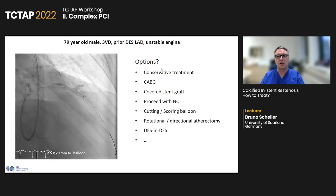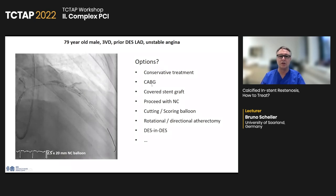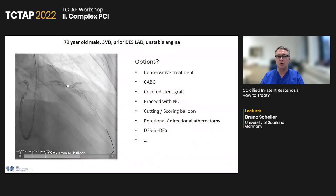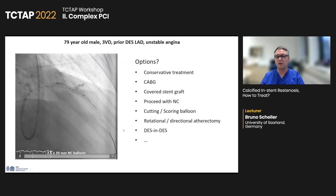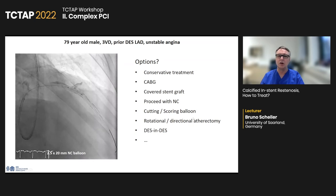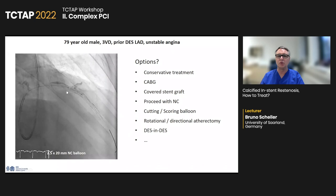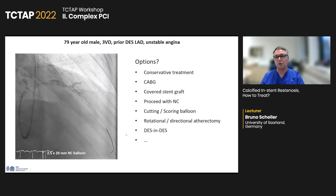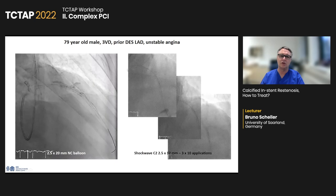What options do we have? Conservative treatment, stop the procedure, ask your cardiac surgeon to take over, covered stent graft to cover the extravasation. However, the covered stent graft will not be fully expanded, giving high risk of thrombosis and restenosis. Another option: take another non-compliant balloon and do it again. Cutting and scoring specialty balloons are an option. Atherectomy devices could be discussed, or simply put another stent in hoping to cover the dissection. We decided for intravascular lithotripsy — three applications with a 2.5 by 12 mm shockwave balloon.